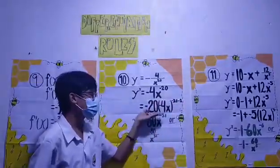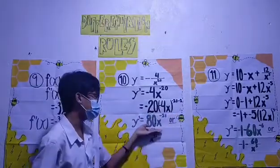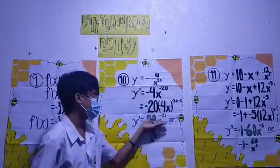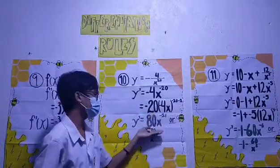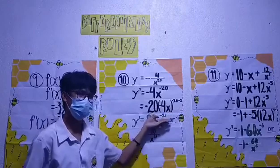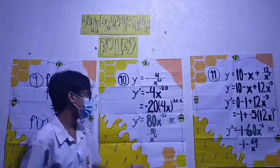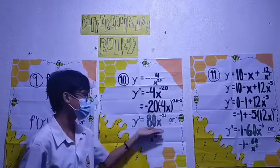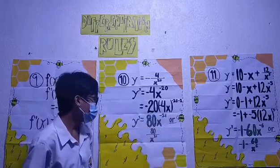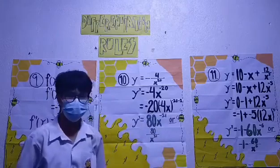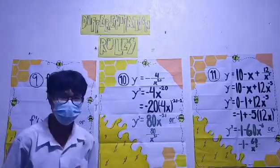Negative 20 times negative 4x is equals to 80x, and negative 20 minus 1 is equals to negative 21. Therefore, our y prime is equals to 80x raised to negative 21, or 80 over x raised to 21.